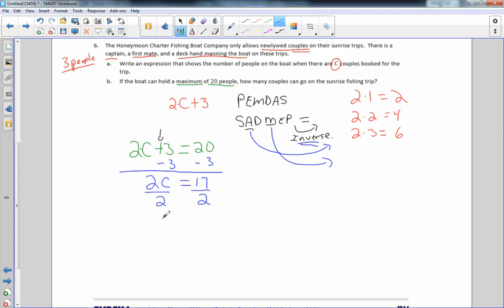So how many couples can I have? Eight and a half couples. Now in the context of this real-world situation, 8.5 does not make sense. A half a couple is an individual, and this charter company focuses on newlywed couples. So I can't put nine couples on there because that'd be 18, plus my three crew members, puts me over 20. So I need to round down and say that the number of couples that can go on this boat is eight. So the answer to this question is eight couples.